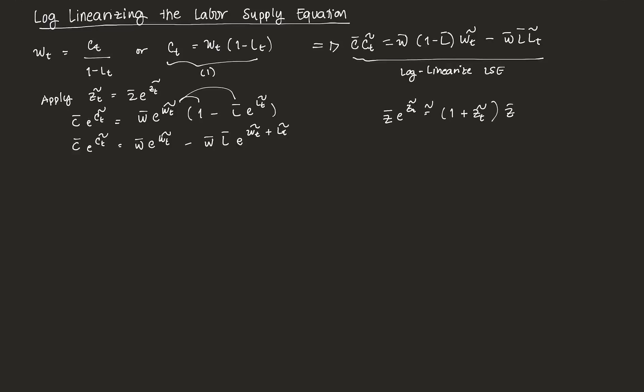So for example, here, we can apply that same rule. So that's C bar, 1 plus Ct tilde, that's equal to W bar times 1 plus Wt tilde minus W bar L bar. Then similar rule, that's 1 plus Wt tilde plus Lt tilde. Same rule as what we discussed in the last video.